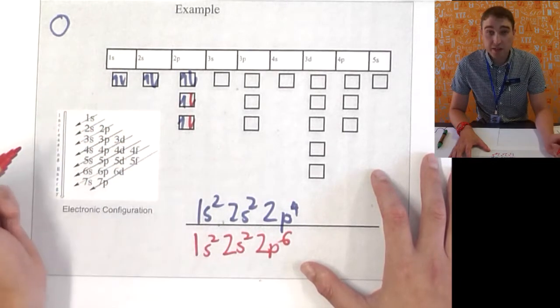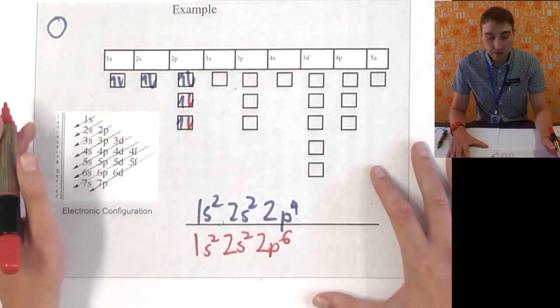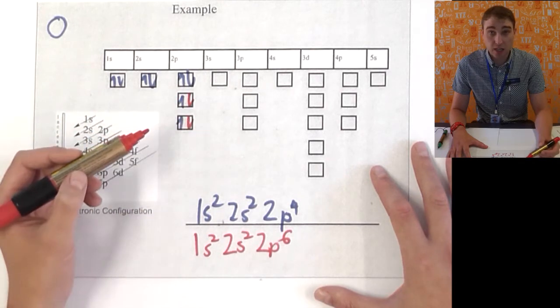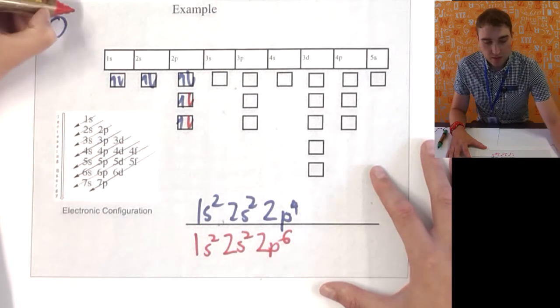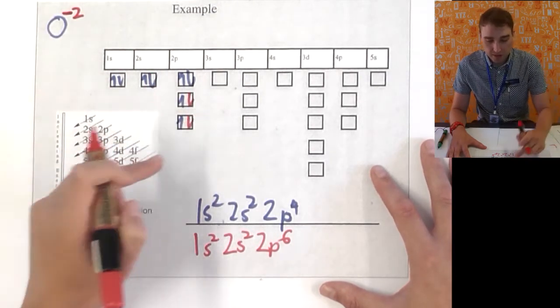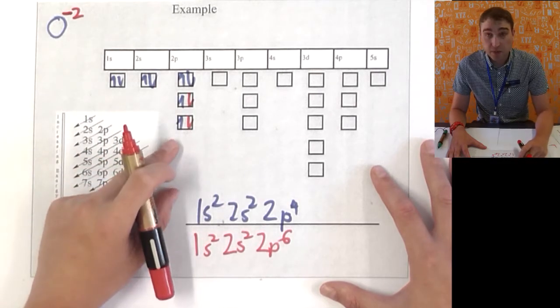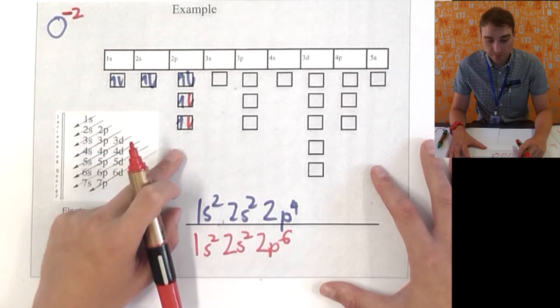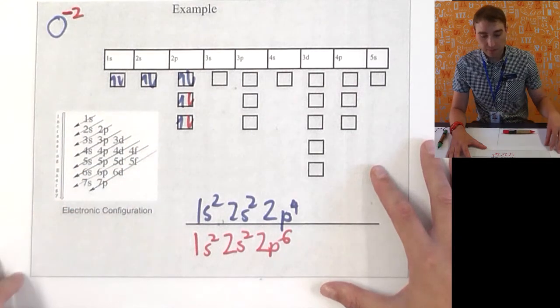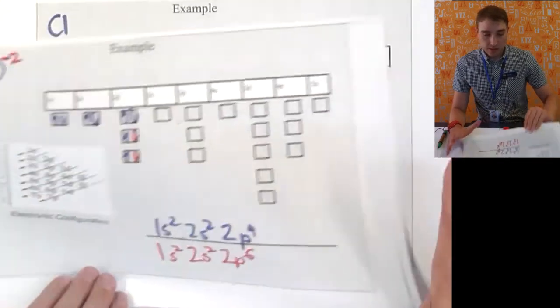What that'll do is, it'll give me an electron configuration where I have a full outer shell. The problem is, I've gained 2 electrons. Now I need to figure out what the charge is going to be. Because I've gained 2 electrons, that means I've got 2 more electrons than protons. So, it is going to be the O2- ion. It's gained 2 electrons, it's filled up that subshell there.